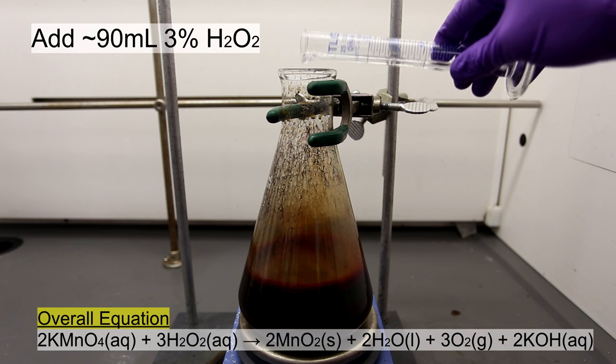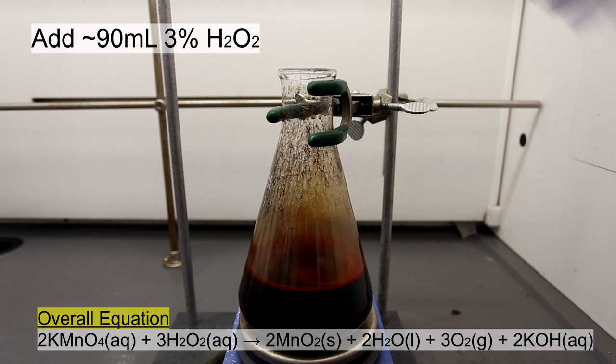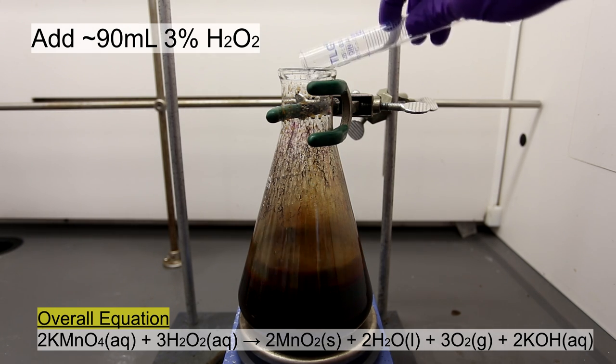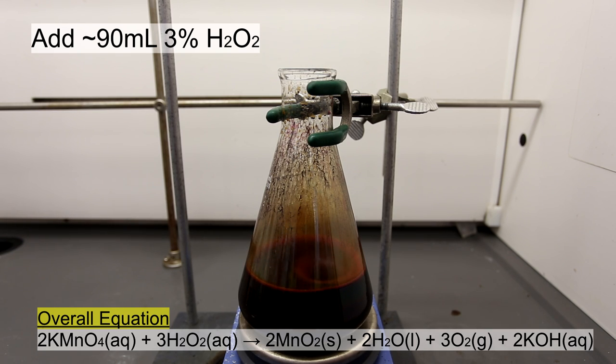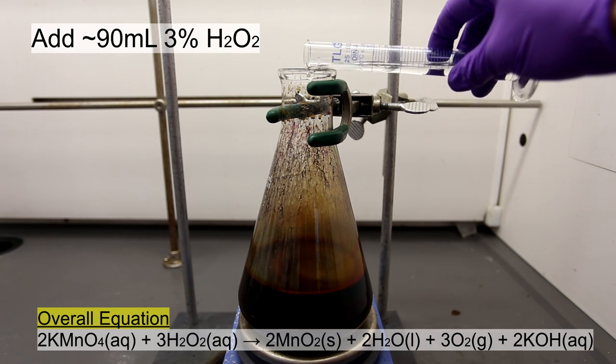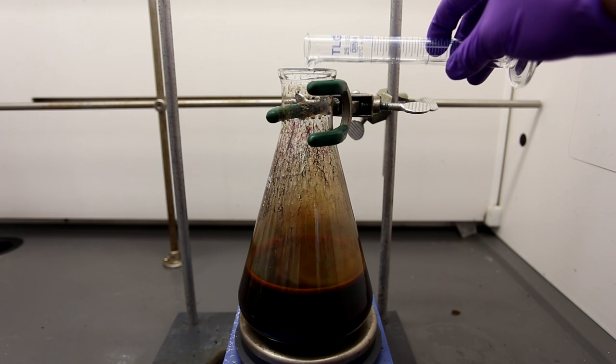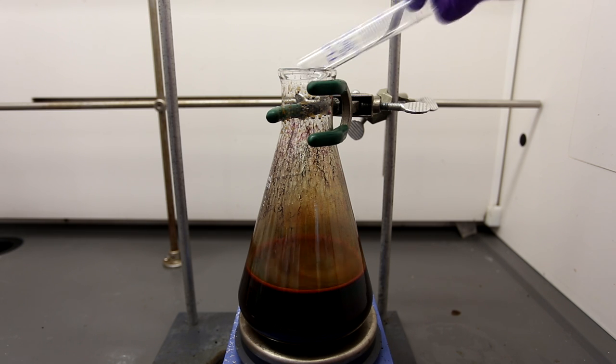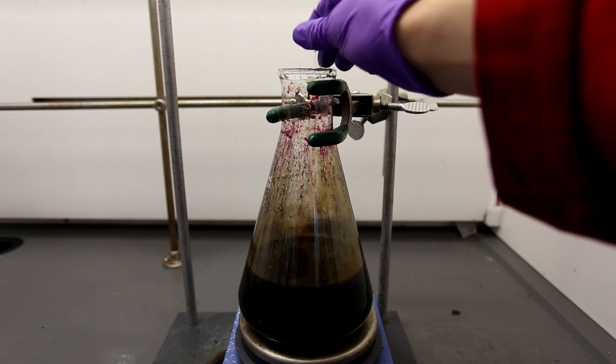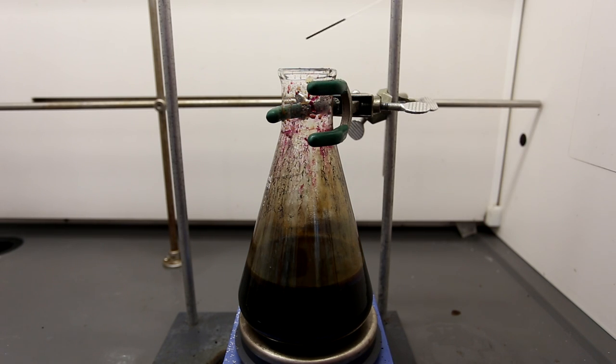The KMnO4 remaining in solution was neutralized by the addition of about 90 milliliters of 3% hydrogen peroxide, which was added in small additions. In the interest of time, only a few of the dozen additions were actually filmed. After adding all of the hydrogen peroxide, a pasteur pipette is dipped in to verify that there is no pink KMnO4 color.